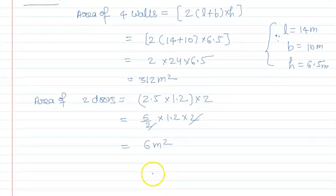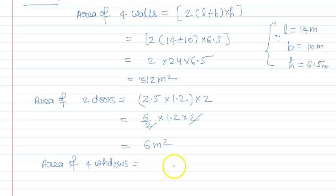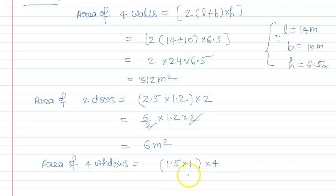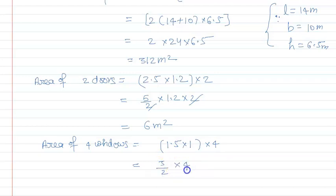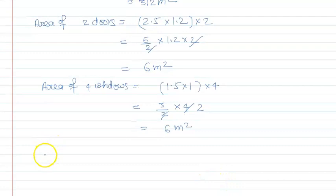Similarly, area of 4 windows निकालते हैं। Window की dimension है 1.5 meter × 1 meter। 4 windows हैं तो 4 से multiply करेंगे। 1.5 को 3/2 लिखें, 2 cancel हो जाएगा: area of 4 windows = 6 meter square।